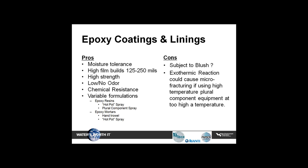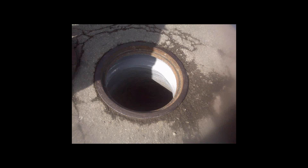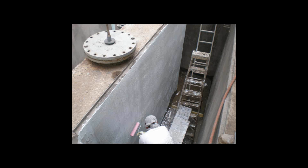The cons of epoxy linings are they are subject to blush — certain constituents create a waxy film on the surface, though this doesn't really matter in a manhole. The exothermic reaction is a concern: if materials are applied too hot, they will cause cracking or brittleness of the film. Shown here is a completed manhole with epoxy coating, an epoxy in a wet well, and a super manhole that had complete aggregate showing, with 250 mils or a quarter inch of epoxy in the structure that extended its life.